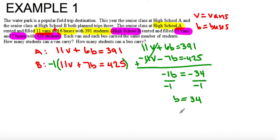Alright, so B stands for buses, so there are 34 students on a bus. 34 students can be carried. We still have to figure out how many students fit in a van.